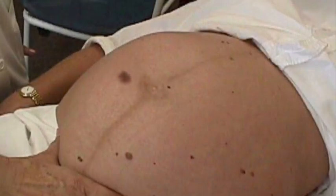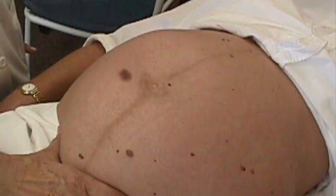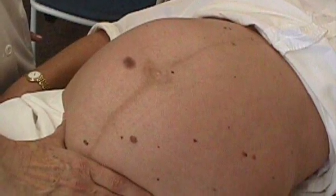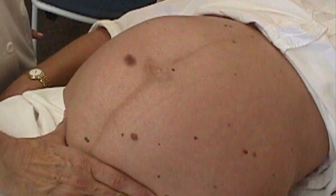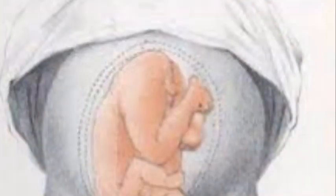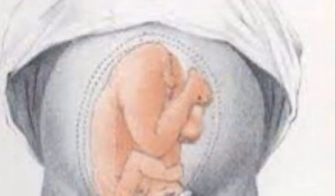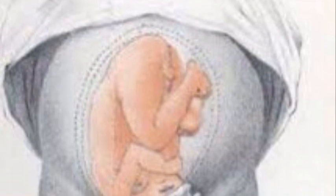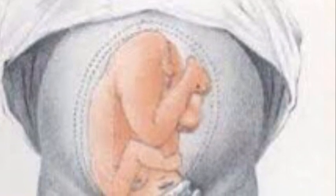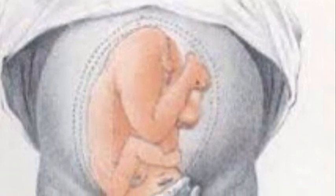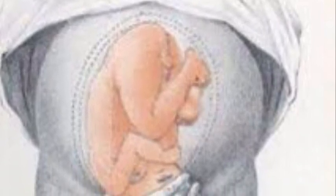The third maneuver is the Pawlik's grip. Move hands down to the lower pelvic area. Palpate the area just above the symphysis pubis to determine the presenting part. Grasp the presenting part with the thumb and fingers of the right hand. This step identifies the part of the fetus that is above the inlet.